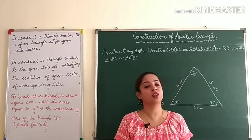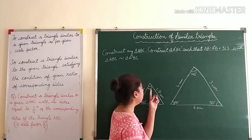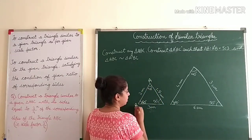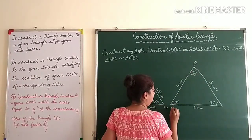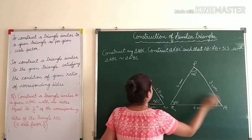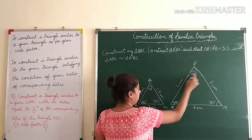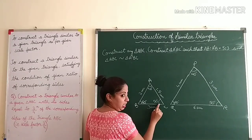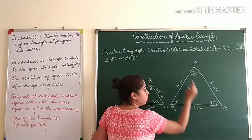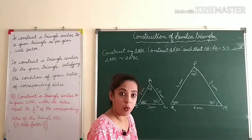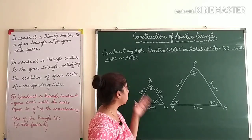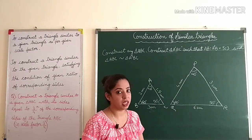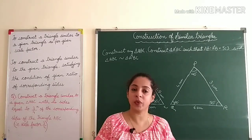Similar triangles are those triangles whose corresponding angles are equal. For example, if triangle ABC and triangle PQR have angle A equal to angle P, angle B equal to angle Q, and angle C equal to angle R, then the corresponding sides are in the same ratio — they need not be equal. If they were equal they would become congruent triangles.